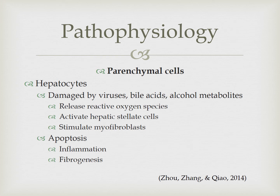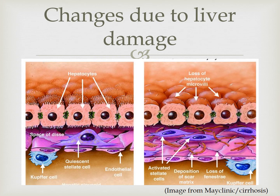As all of these cells are damaged, you can see how each one causes increased inflammation and scar tissue buildup that lead to cirrhosis, which just gets worse as it progresses. In this image, the changes in the hepatocytes are visible — microvilli are not present in the case of cirrhosis on the right compared to the normal image on the left. The stellate cells are activated, scar matrix is forming, there is a loss of fenestration between the cells, and the Kupffer cell is ready to engulf any harmful compound as the immune response continues.